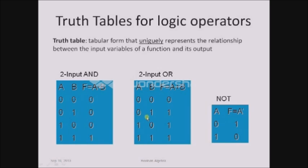You can see that when one variable is one, the output is one; when both variables are one, the output is again one; but when both variables are zero, the output is zero. As for the NOT gate, since complement operates on only one variable, there is only one input variable a, and the output expression is a complement. If a is zero, the output is one; and if a is one, the output is zero.